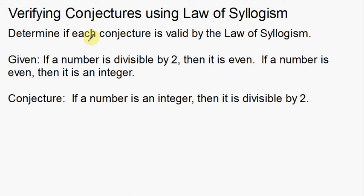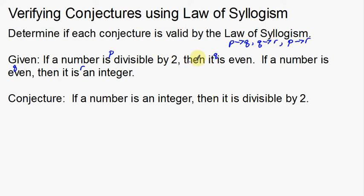Let's do a separate example. The Law of Syllogism: if P then Q, if Q then R, and then we can say if P then R — this last statement connects the first two. So: if a number is divisible by two — call that P — then it is even — call that Q. If a number is even — Q again — then it is an integer, which is new, so we call that R. That actually makes sense: if a number is divisible by two, then it's even; even numbers are integers.